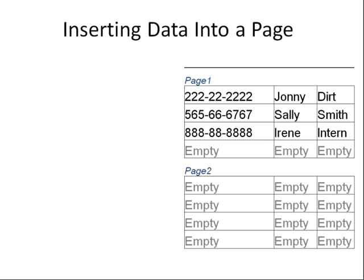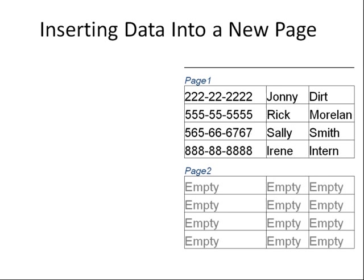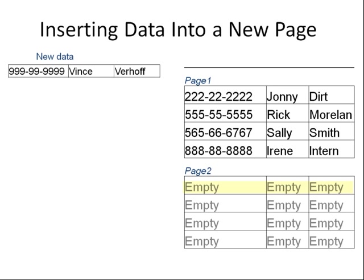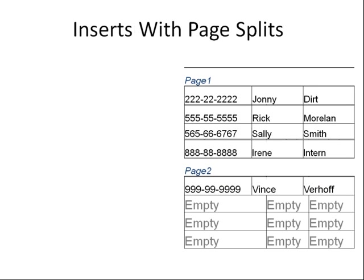What happens when new data starts coming in? Take Rick Marlin — his social security number starts in the fives. He belongs right there in that page, and there is enough room to accommodate him without moving other records to a new memory page. That memory page is now full. The next new hire, Vince Verhoff, goes after Irene Intern, so he can start occupying the next page of memory.